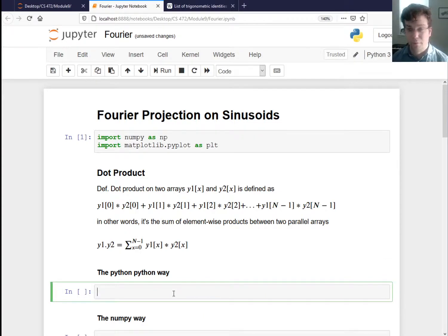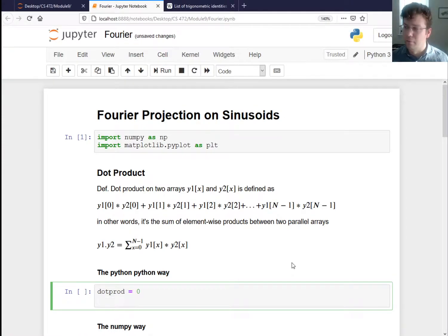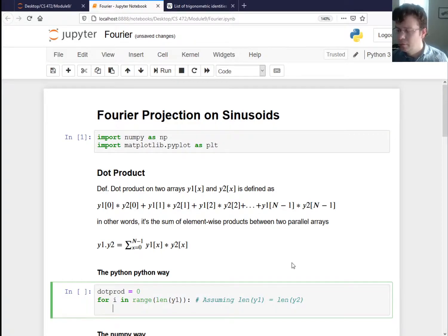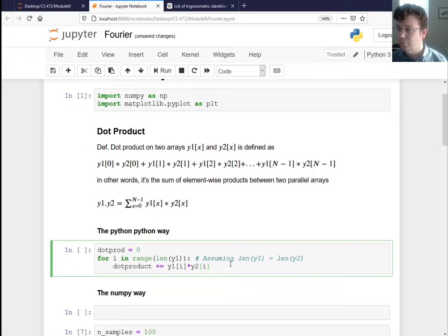Now, I find that computer science students like to see code, and you really can just define this stuff in code, too. So let's see how you would do it the Python way. What I can say is, I need an accumulator variable that's going to accumulate these element-wise products. I'll call it dot_prod. Starts off at 0. So I'll say, for i in range length of y1, so I'm assuming length of y1 is equal to length of y2. So now I can say dot product plus equals y1 at index i times y2 at index i. So that's what you're doing.